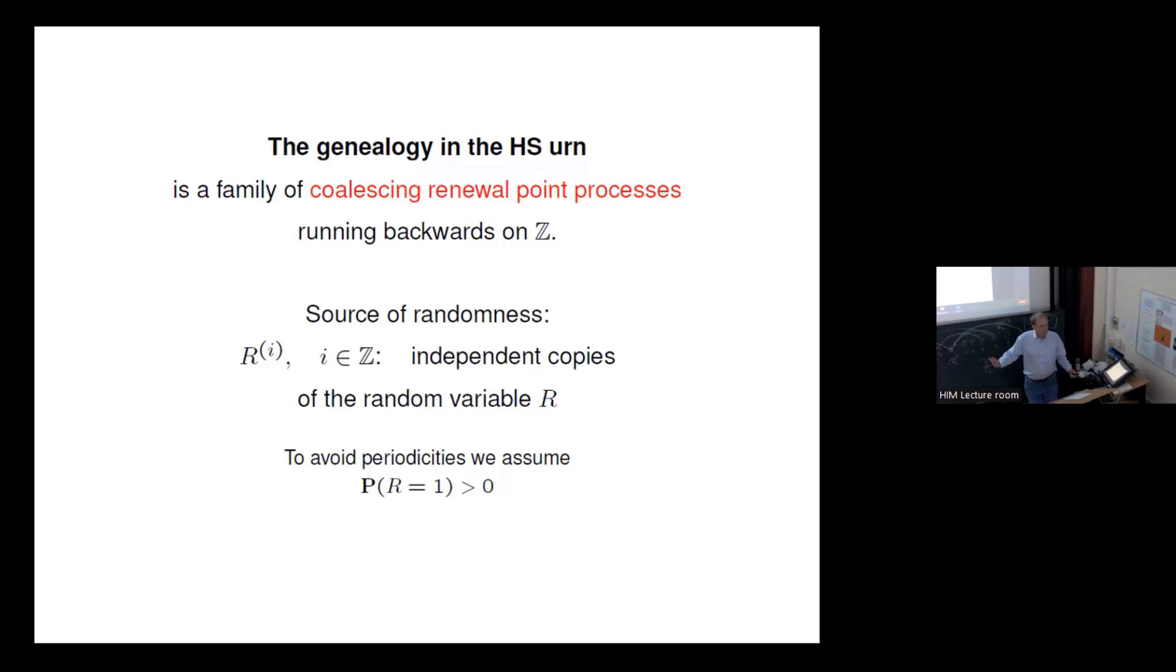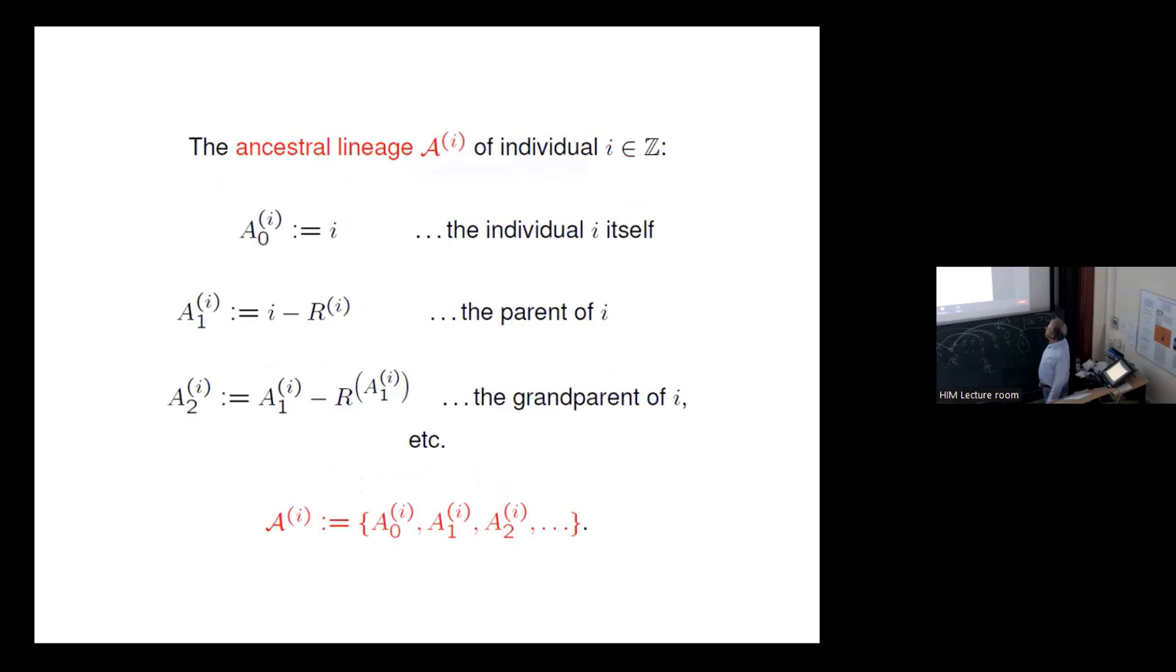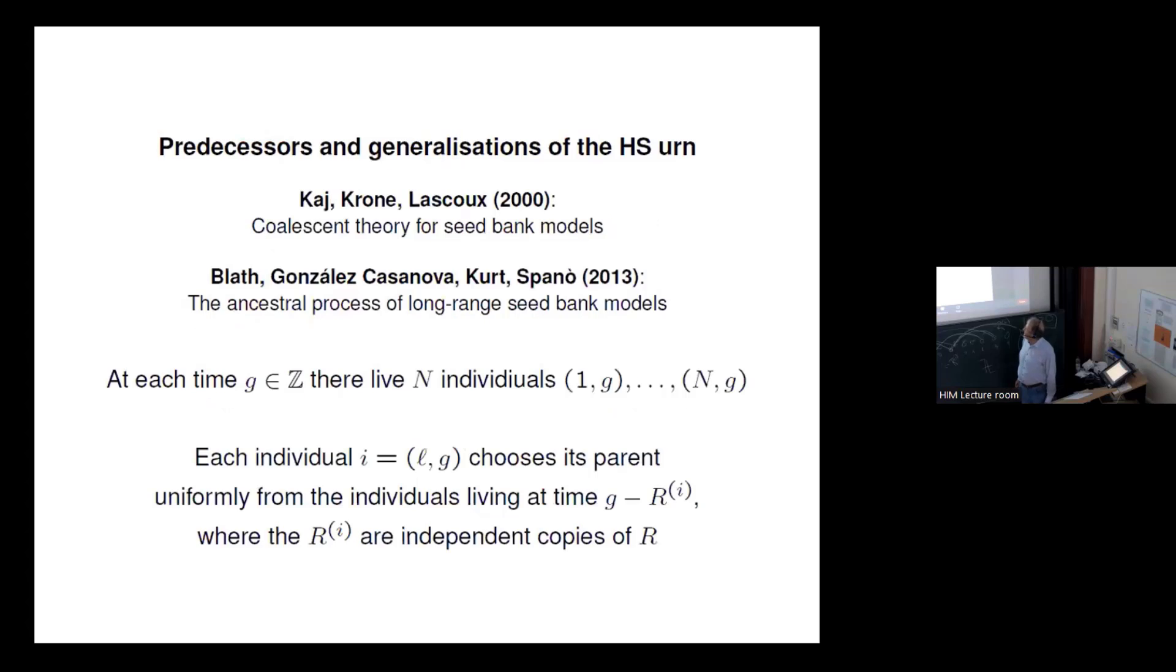So far so okay. Please ask questions whenever you want. Now the ancestral lineage of an individual i is this guy. It's the union of all the ancestors, the individual itself, the parent, the grandparent and so on. This is the script A_i.